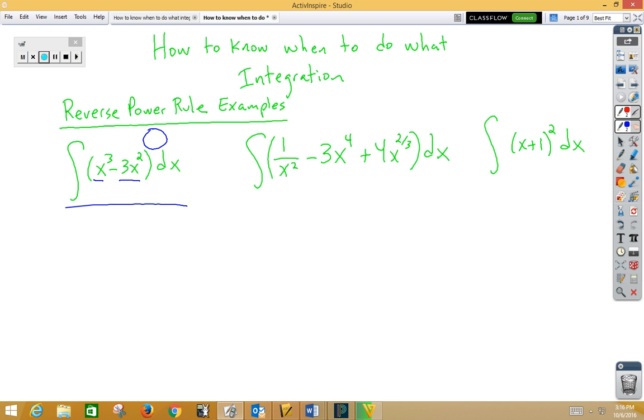In our second example, again, even though there are parentheses, there's no outside function, so again, just integrate one term at a time using the reverse power rule.